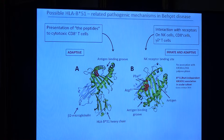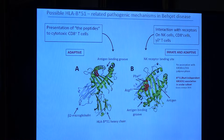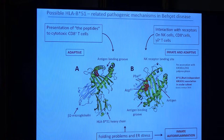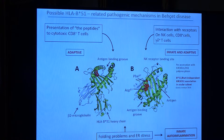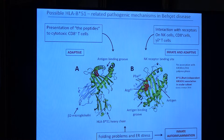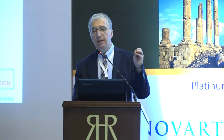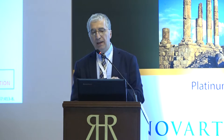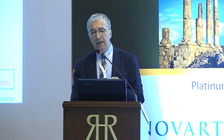As a class 1 molecule, B51 can either present certain peptides to cytotoxic T cells — though no peptides specific for Behçet's disease are known — or, carrying the BW4 epitope, interact with NK cell receptors on NK cells, cytotoxic T cells, or gamma-delta T cells. A third option is folding problems. Very similar to the HLA-B27 story, B51 is a slow-folding protein requiring proper peptides. If the peptide-HLA combination is incorrect, there is improper folding or unfolded protein response, causing endoplasmic reticulum stress and activation of innate immunity. Both folding problems and cytotoxic T cell responses require peptides.